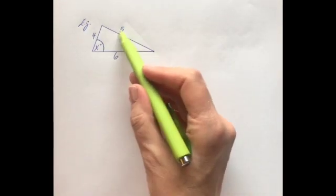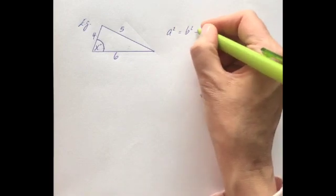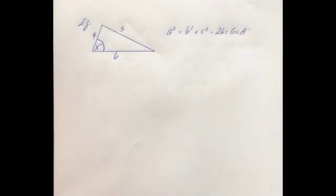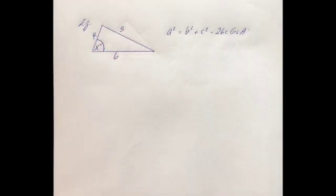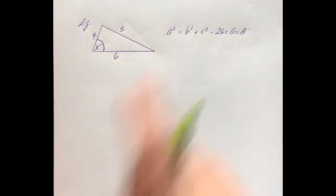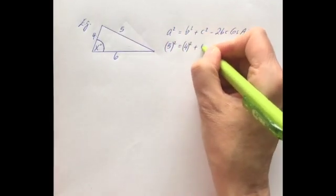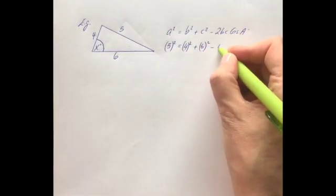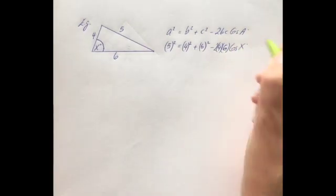In this example we've got a non-right-angled triangle again — two options, sine rule or cosine rule. We can't link opposites, and the unknown angle is cozy between two sides, so we use cosine rule: a² = b² + c² − 2bc cos A. Here I don't know the angle, but I have all the side lengths. The angle is between sides 4 and 6, so I sub in 4 and 6 for b and c, and 5 for a. That gives: 5² = 4² + 6² − 2(4)(6) cos x.